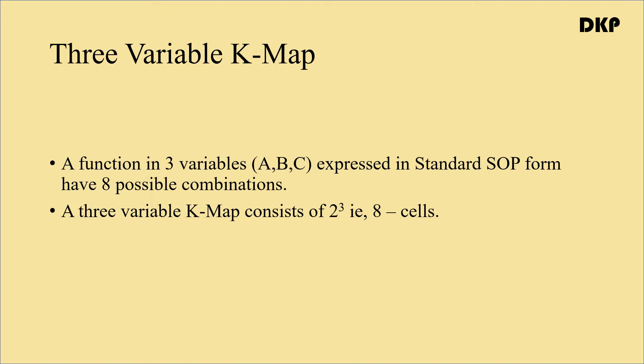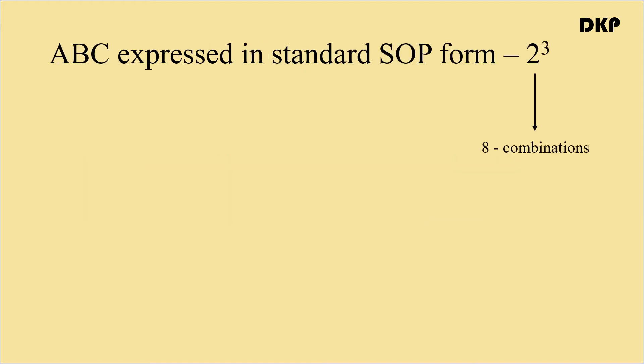In order to minimize the SOP or POS expression, we use a K-map. We can use a two variable K-map, three variable K-map, or four variable K-map according to the variables present in the SOP and POS expression. We can use this K-map to simplify the POS and SOP expression. Here we are going to learn how to use a three variable K-map to simplify the SOP expression.